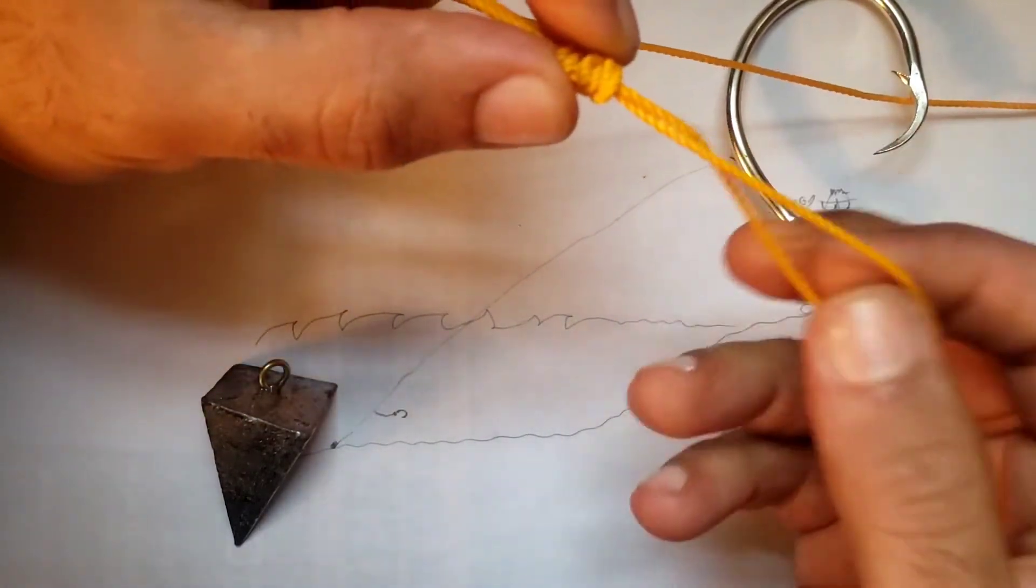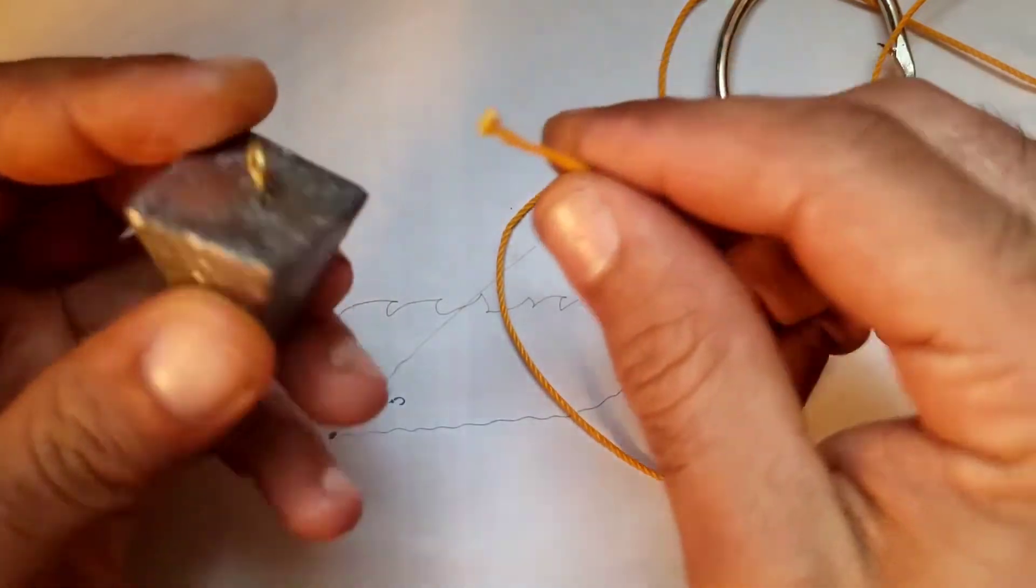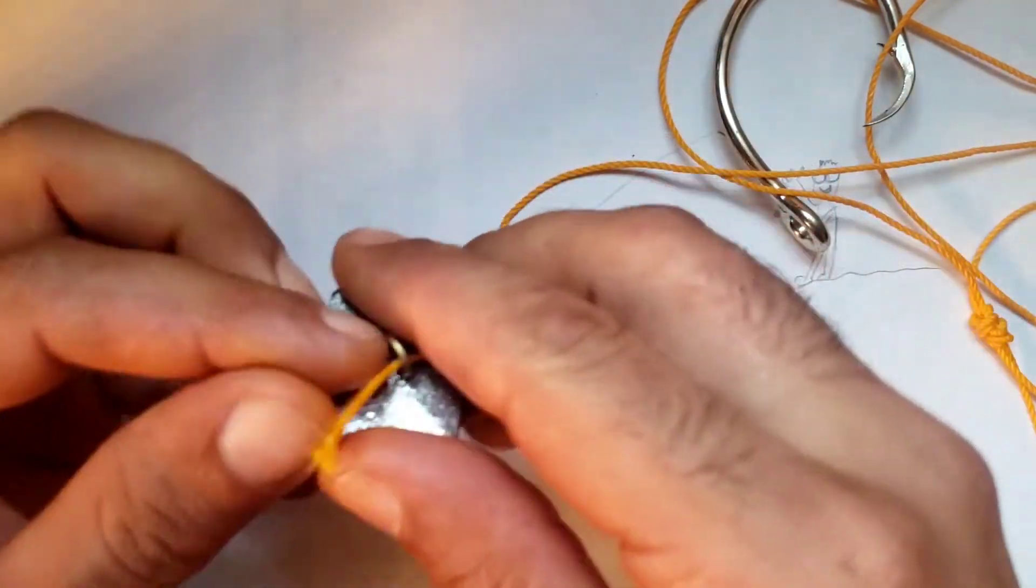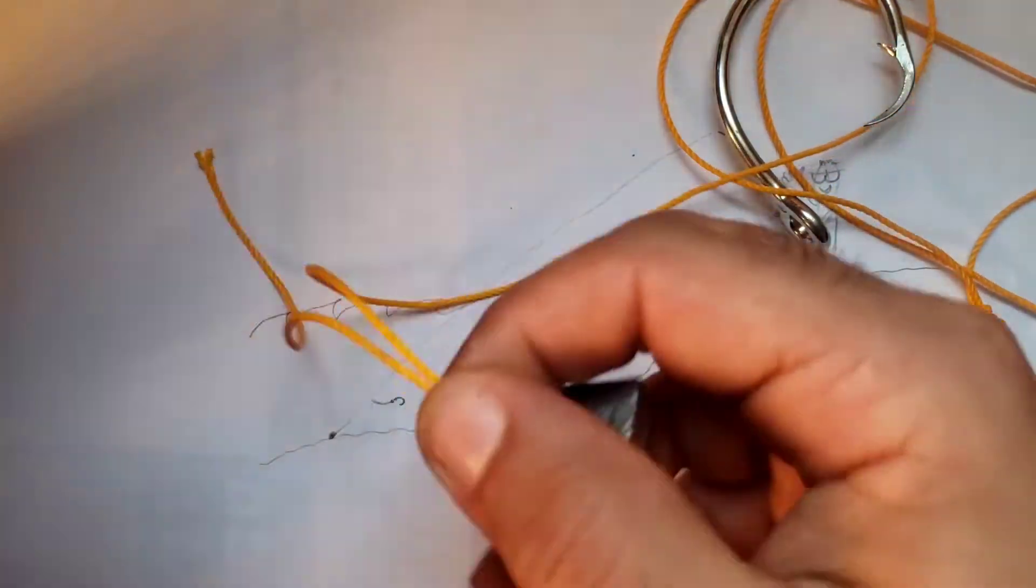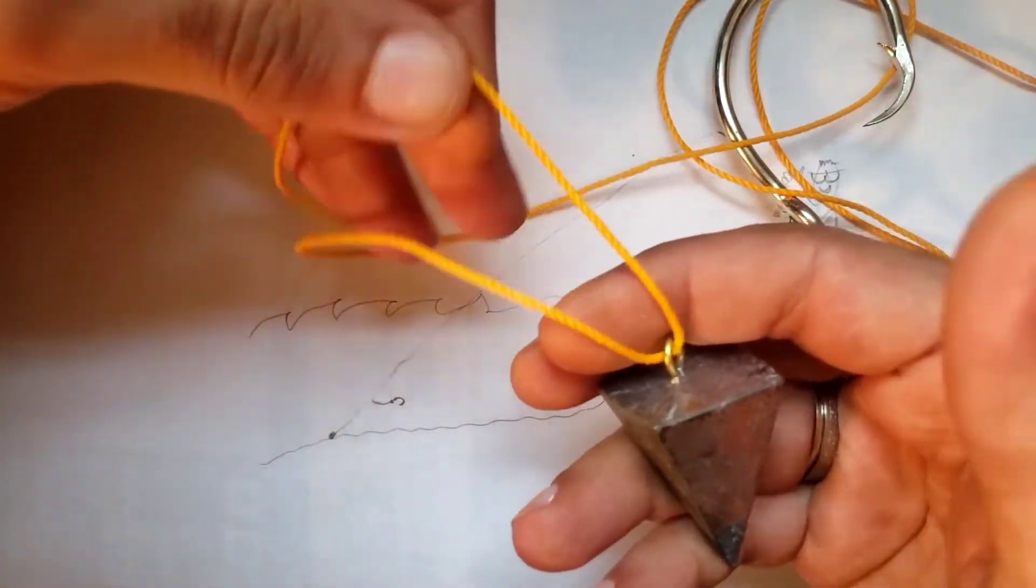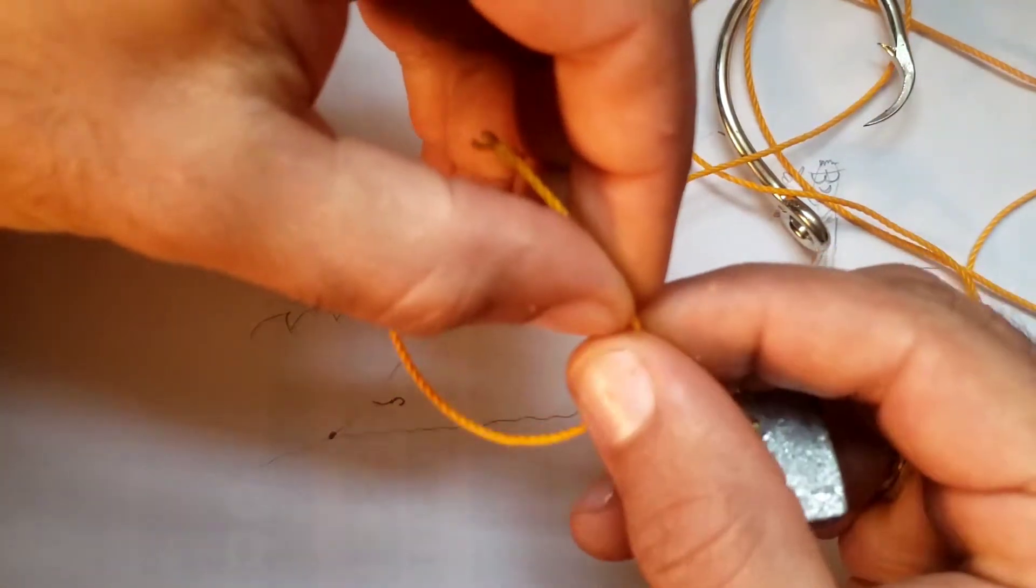Nice little dropper loop. Okay, take the other end. Here's your sinker through the sinker. Got it? Another loop.